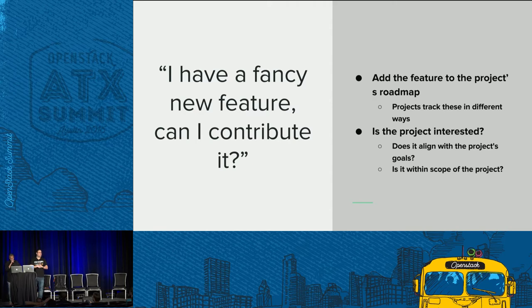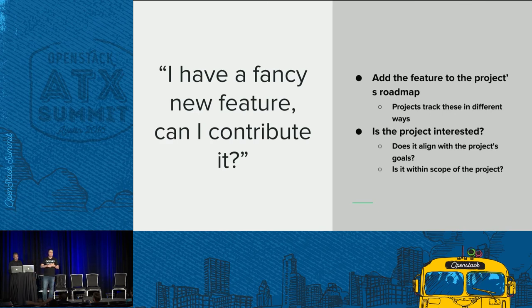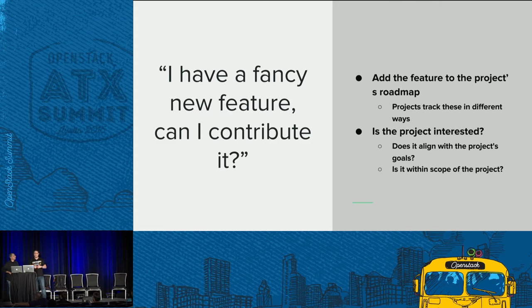What did we learn? A lot of these projects have a roadmap. The projects we presented have different ways of tracking and accepting new features — some have a very complicated process, some just use a mailing list. Figure that out before you jump in with your 5,000-line patch. And guess what? The project might not be interested in your feature. Does it align with the goals? Is it within the scope of the project?